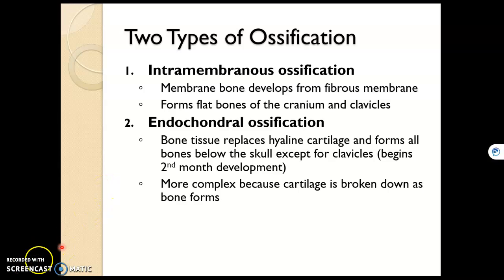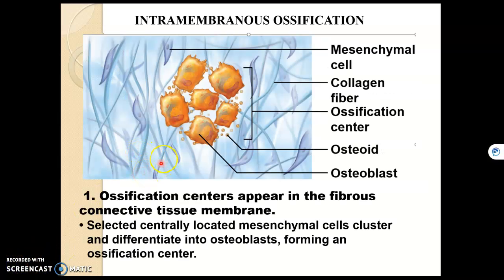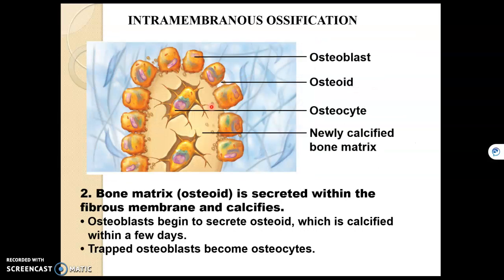In intramembranous ossification, the most important structures are the mesenchymal cells — these are stem cells that can become any type of connective tissue cell. In the right environment, these mesenchyme cells become osteoblasts, and we know what osteoblasts do: they start to build bone by secreting osteoid. As osteoid is secreted, more osteoblasts differentiate, producing more bone. Some osteoblasts get trapped in their own osteoid, forming a lacuna with an osteocyte inside.